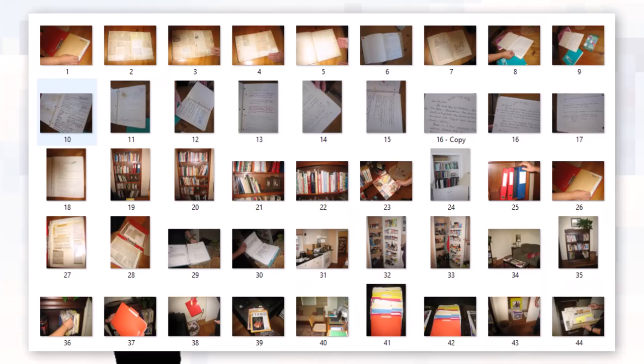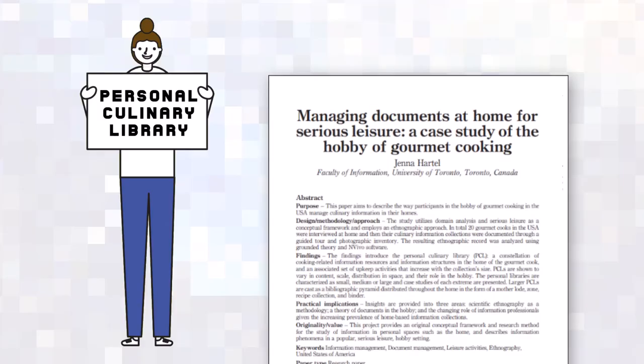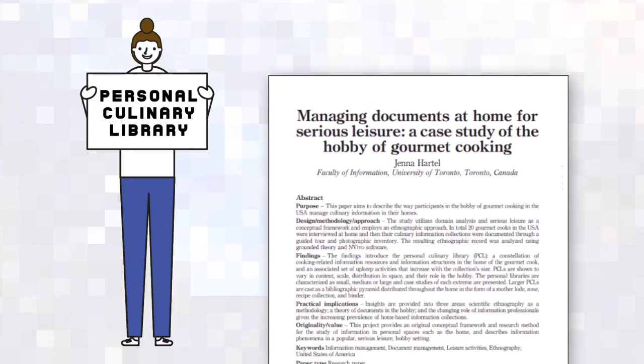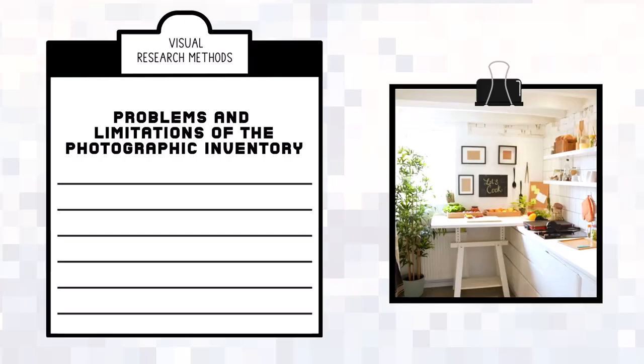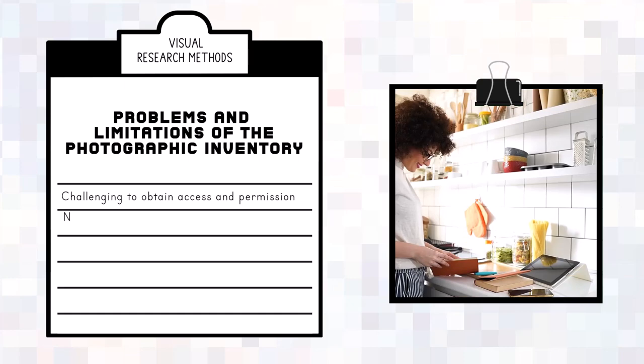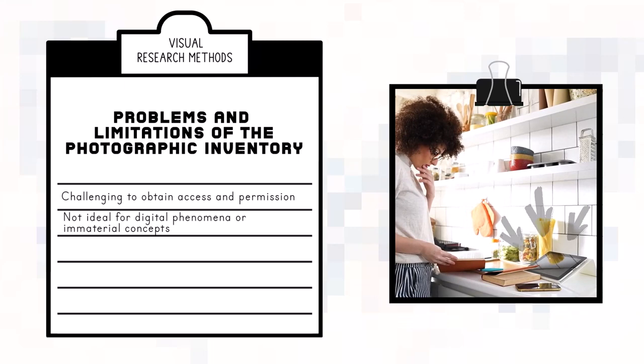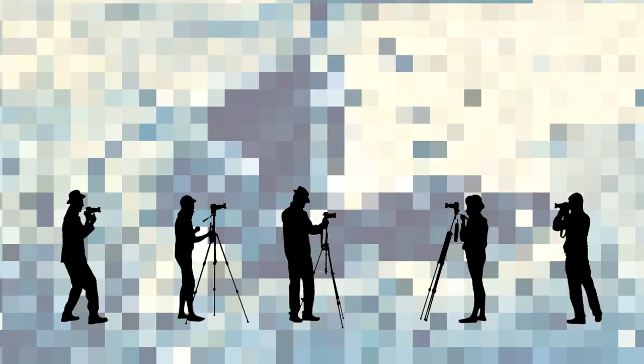The process generated more than 500 photographs and helped me describe the personal culinary library and to create models of information use in the hobby of gourmet cooking. This visual research method is not without problems and limitations. It can be challenging to obtain access to some settings and permission to take photographs. It is not an ideal technique to document digital phenomena or immaterial concepts. Informant privacy and anonymity must be carefully respected. Good luck with your photographic inventory.